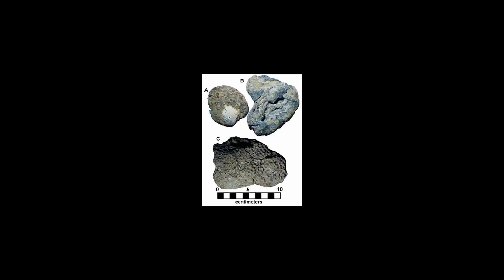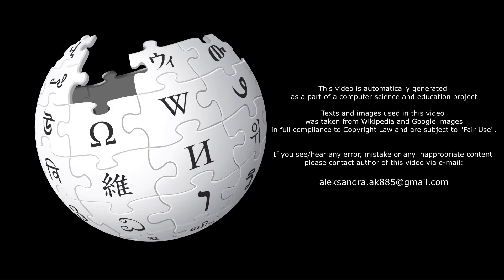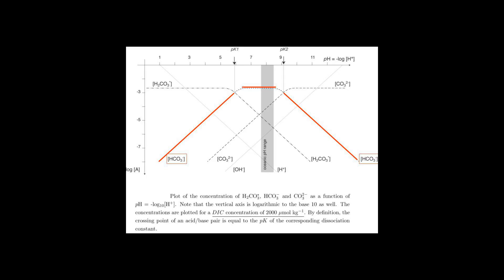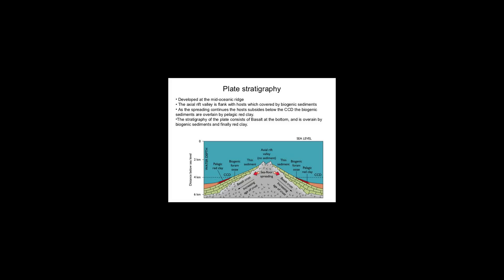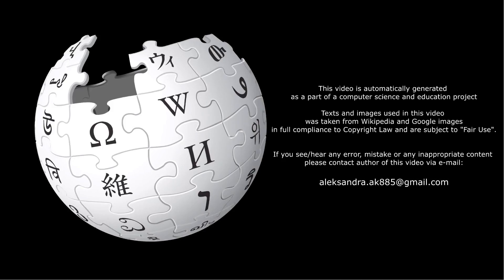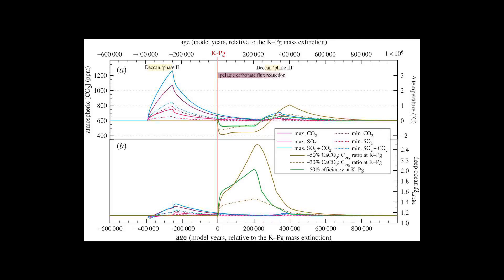At the present time, the CCD in the Pacific Ocean is about 4,200 to 4,500 meters, except beneath the equatorial upwelling zone where the CCD is about 5,000 meters. In the temperate and tropical Atlantic Ocean the CCD is at approximately 5,000 meters. In the Indian Ocean it is intermediate between the Atlantic and the Pacific, at 4,300 meters.